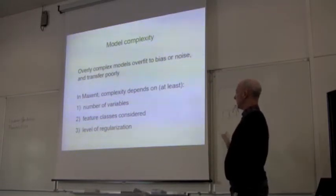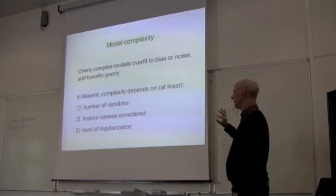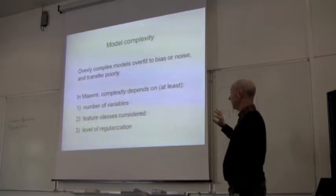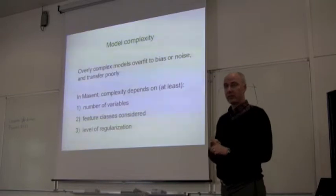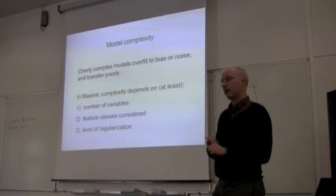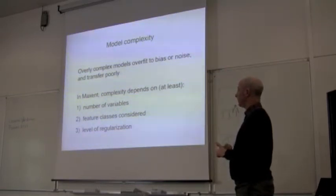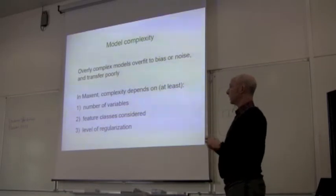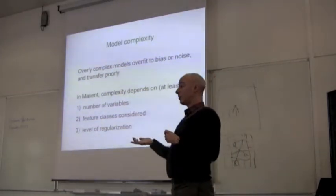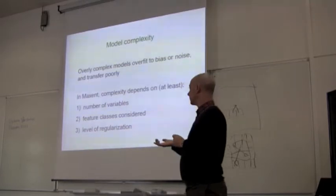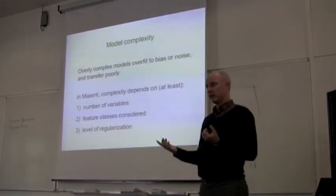Complexity depends on many things. Three of the things that can affect complexity of the model are: one, the number of variables that you provide as possible variables to use; another is the particular feature classes that you allow the model to try to use; and the third is the level of regularization.